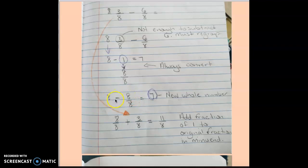So now I have eight minus eight over eight equals seven, my new whole number. I'm going to add the fraction of one, which is eight over eight, to my original fraction of three over eight, and now I have a fraction of eleven over eight.